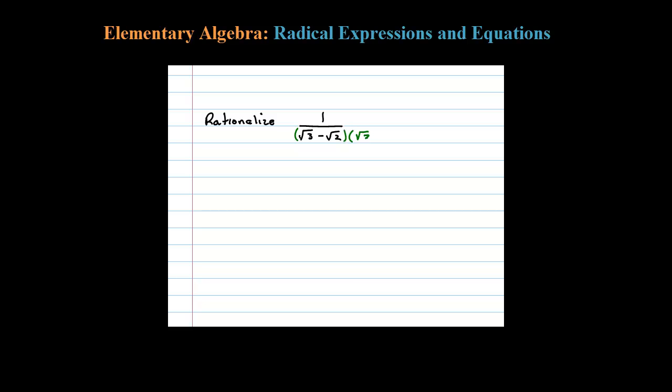So here we had square root of 3 minus square root of 2. The conjugate is going to be plus the square root of 2. Whatever you multiply the denominator by, you also have to multiply the numerator by the exact same thing.